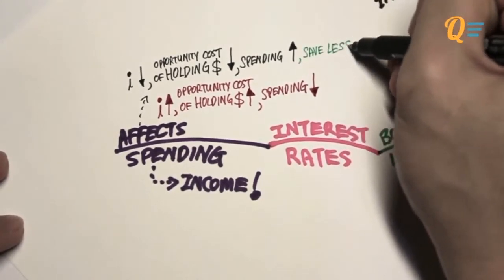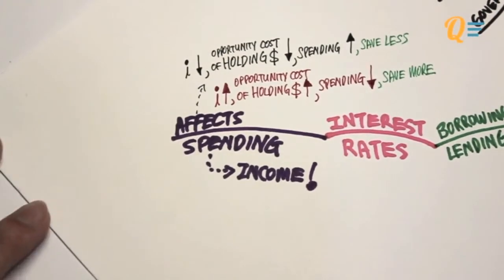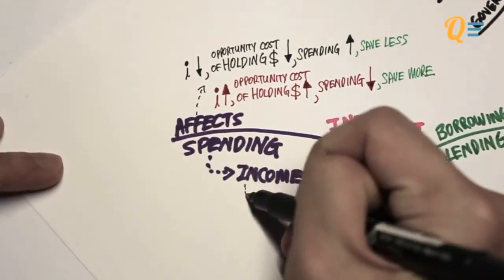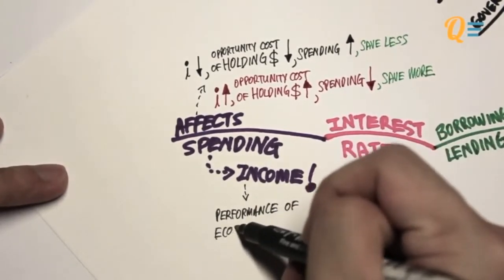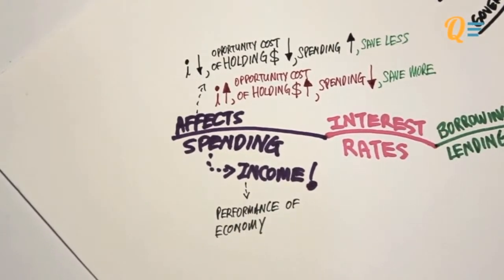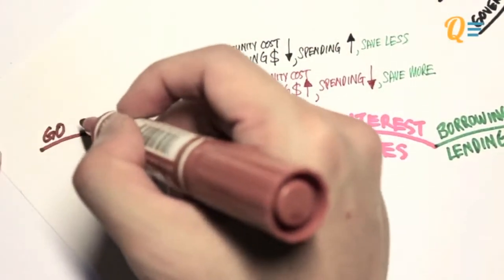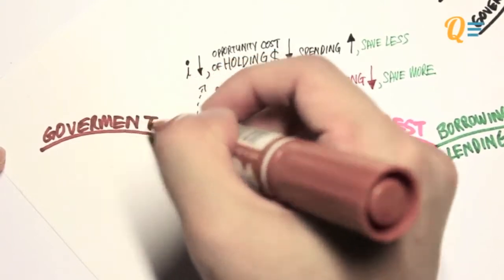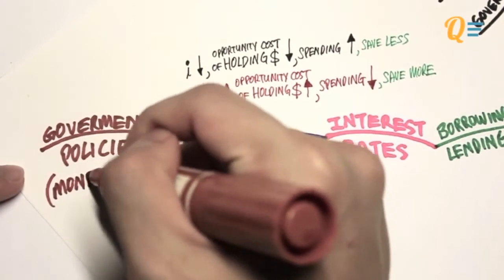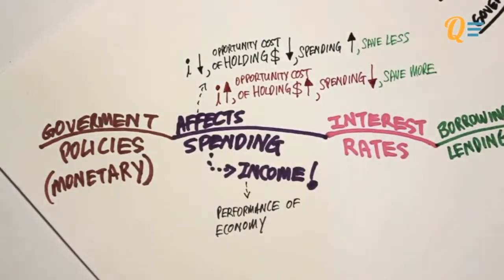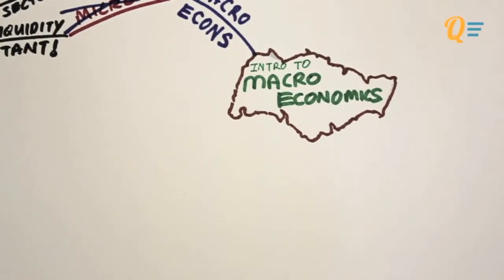When interest rates are low, you actually save less and spend more. When interest rates are high, you save more and spend less — you can see the inverse relationship. Income actually measures the performance of an economy, and the performance of an economy is managed by government bodies. The government, using certain policies, can affect the interest rates of the economy, thereby affecting its performance or income — more specifically, we're talking about monetary policies.